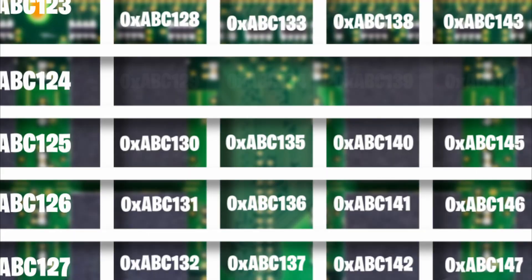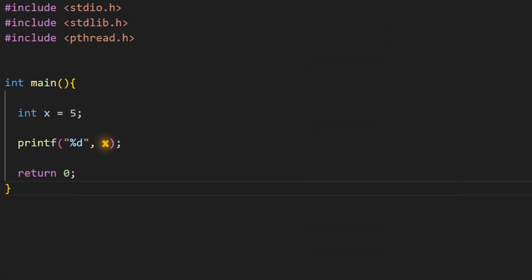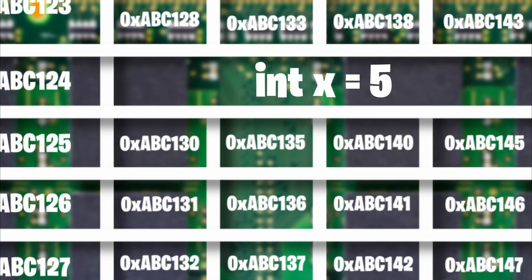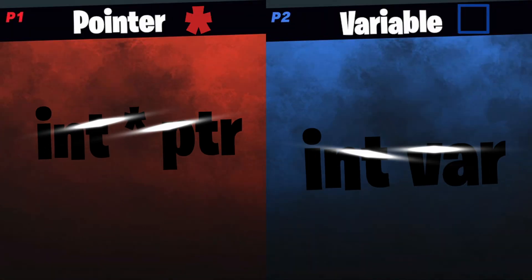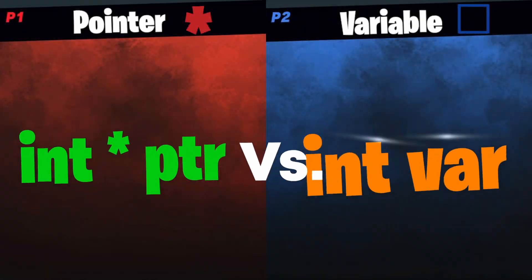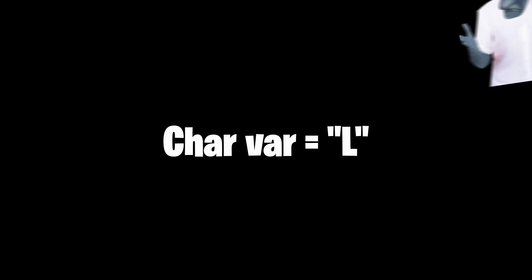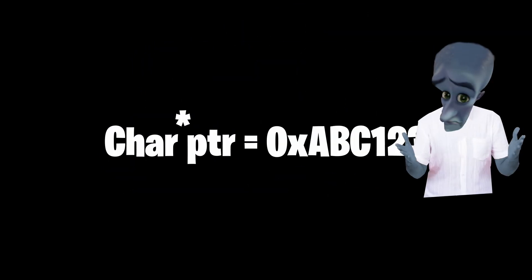This can, as an example, be a normal int variable x that stores the value 5. So when we use our variable, the program checks the space in the memory assigned to this variable to see what is there. A pointer is different to a normal variable because it, instead of storing a direct value, stores the address of a value.